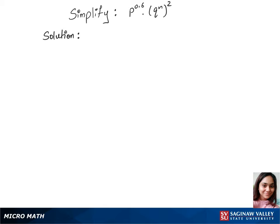To simplify this question, p to the power 0.6 times q to the power n, whole power 2, we'll use the product rule. So it's q to the power n times 2, giving us p to the power 0.6 times q to the power 2n. So this is our answer.